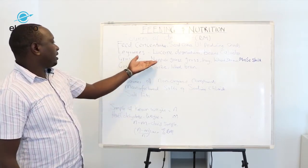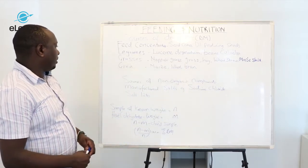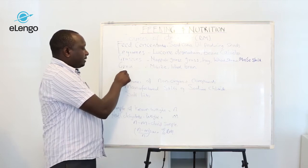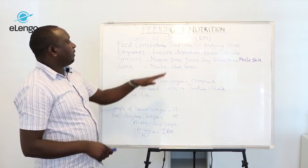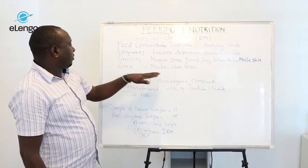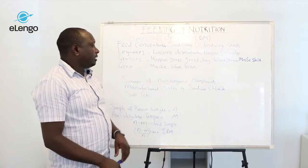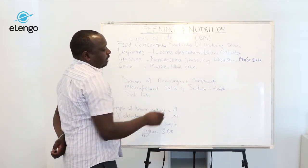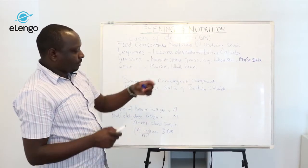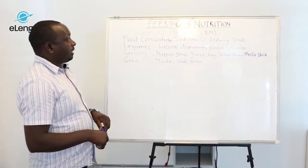We have grains as sources of dry matter: maize, wheat, and bran. Bran in most cases is a product of wheat. These are good examples of dry matter.